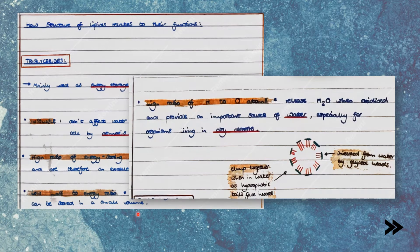Finally, triglycerides have a high ratio of H to O atoms, meaning that they release water when oxidised, and therefore provide an important source of water, especially for organisms living in dry deserts. In an aqueous environment, they clump together, as their hydrophobic fatty acid hydrocarbon tails point inward and are shielded from the water by their glycerol heads.